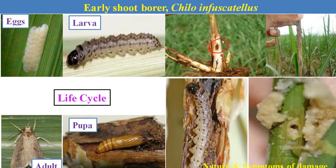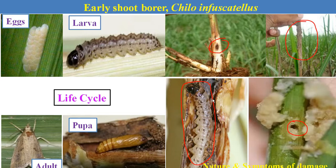This is one of the holes created by the larva of the early shoot borer. It enters the main shoot and feeds on the inner content of the shoot. Due to their continuous feeding inside the stem, it causes a characteristic symptom called the dead heart symptom. This dead heart can be easily pulled out due to the feeding of the caterpillar.